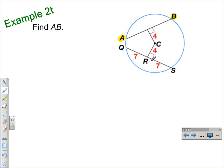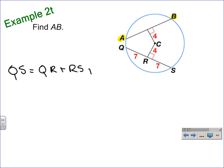It's going to start with the fact that the distance from the center to chord AB is the same or equal to the distance from the center of the circle to chord QS. So, first we need to find the measure of QS. The measure of QS is equal to the measure of QR plus the measure of RS. And that is by the segment addition postulate.